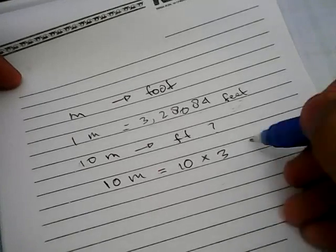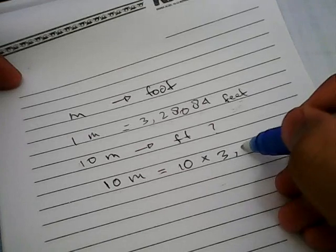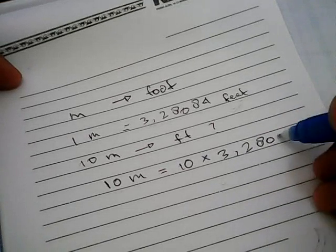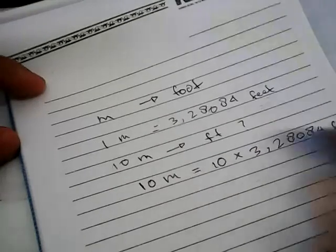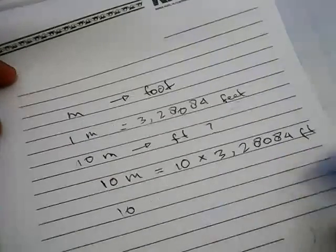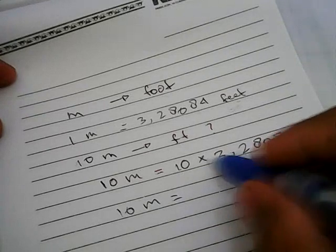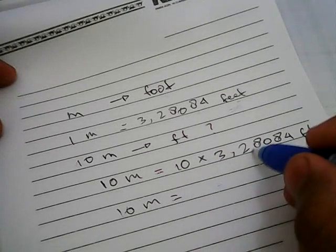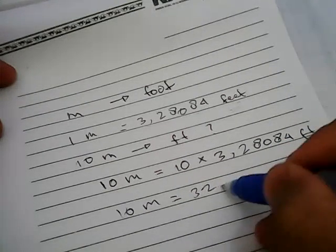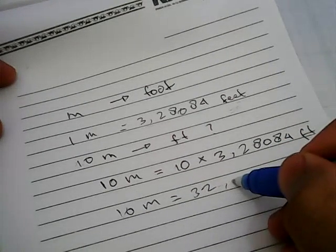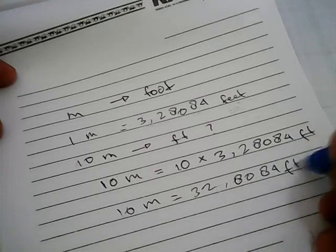Let's write it down: 3.28084 feet. 10 meters is equal to 10 multiply by this one. It's gonna be 32, 32.8084 feet.